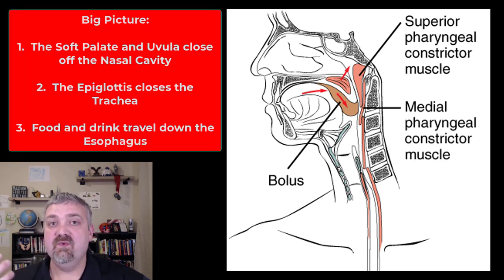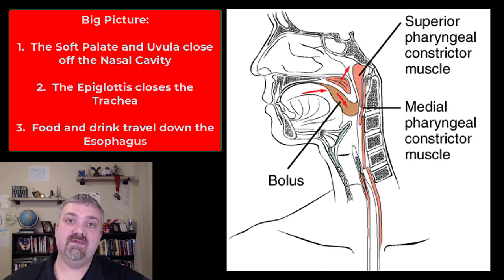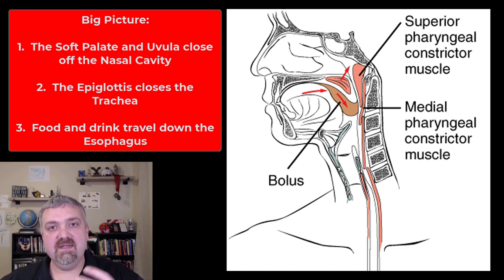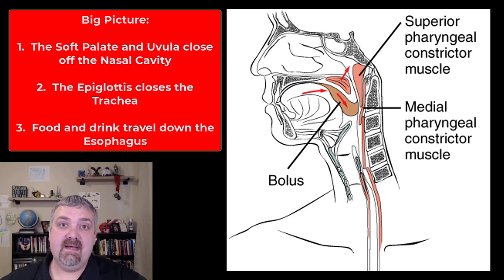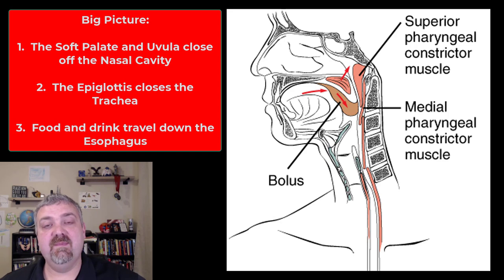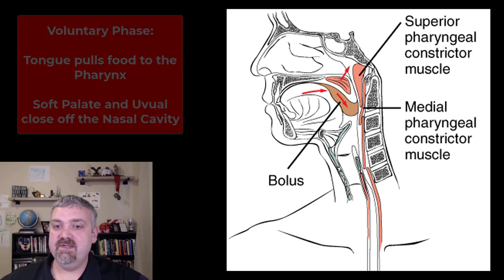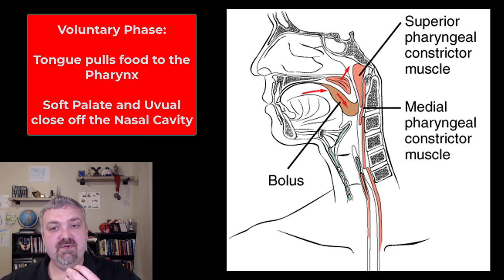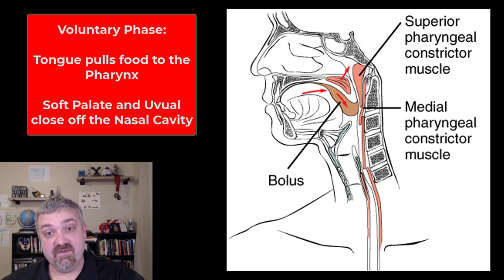Here we're at the voluntary phase. The reason it's called that is because you can decide when to swallow something. Really the last voluntary action involved in swallowing is the initiation of swallowing. We voluntarily trigger the events that lead to swallowing, but in the end your autonomic nervous system will take over, specifically your parasympathetic division. What happens here is the tongue — as you can see from that arrow — is going to push up and back and pull that bolus of food towards your pharynx. While that's happening, your soft palate and uvula is flipping up to make sure the food doesn't go up and into your nasal cavity.